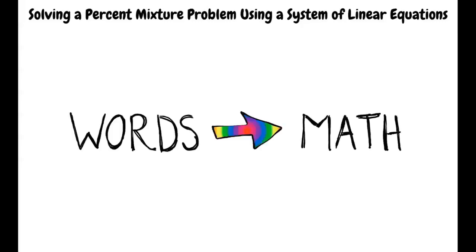This video is an exploration of solving a percent mixture problem using a system of linear equations. For this topic it is important to be able to translate a word problem to mathematical equations. To make this process easier, we will learn how to use a table to help us organize the information and keep track of the variables. We will also learn how to use a graphing calculator to help us solve a system of linear equations.